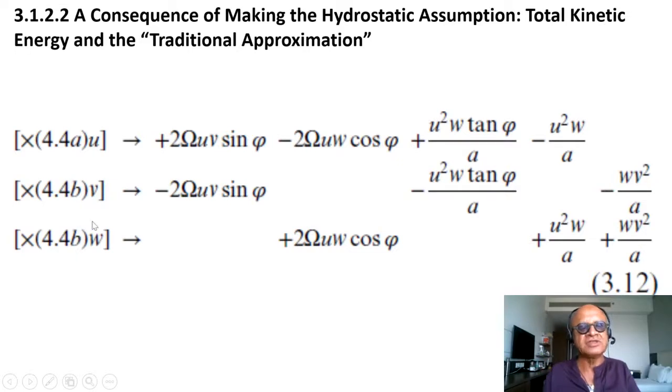You multiply by u, v, and w to compute the kinetic energies. We have 2Ω u v sin φ - 2Ω u w cos φ, u²w tan φ/a - u²w/a, and so on. Again we have vertical terms, geometric terms, and so on. This is the meridional equation and this is the vertical equation. We want to keep w and look at the kinetic energy and see what changes.